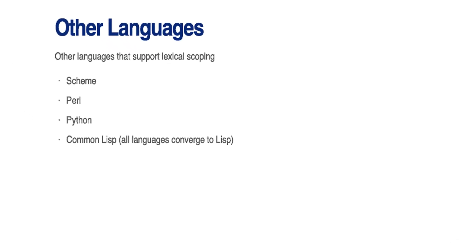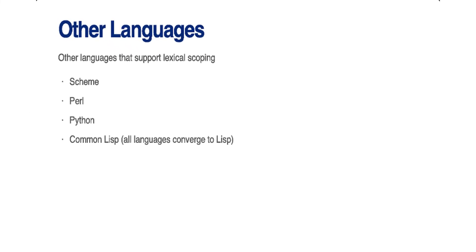There are a number of other languages that support lexical scoping. Some examples are Scheme, Perl, Python, and Common Lisp. There's also a well-known computer science theorem that all languages eventually converge to Lisp. So lexical scoping is not an obscure feature — it's actually very common across many programming languages.